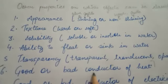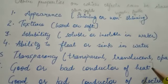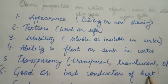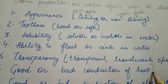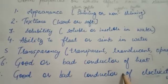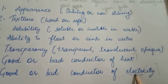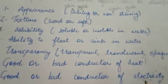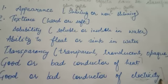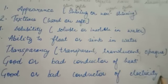The sixth is good or bad conductor of heat — materials jinh mein se heat pass nahi karti, ya jinh mein se heat pass kar jati hai. Metals are good conductors of heat. The seventh is good or bad conductor of electricity — ki woh materials jinh mein se electricity pass hoti hai ya jinh mein se nahi hoti. Metals are good conductors of electricity, but wood and plastic are bad conductors of electricity.